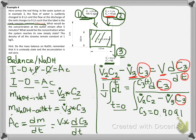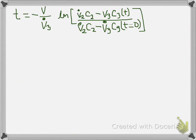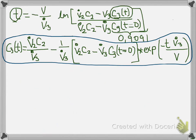At this moment, please pause the video and try to solve this equation. Compare your solution with this one. Remember that this concentration is the concentration at time equals 0, which is 0.9091. Now we have to solve this equation to have C3 as a function of time. And this is what you are going to get. With this equation, we can find the value of the concentration at any given value of time.